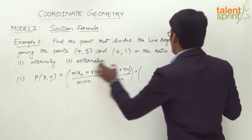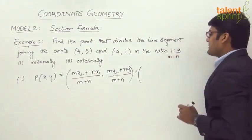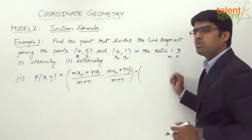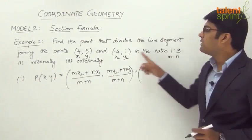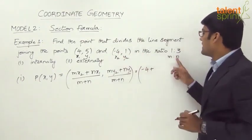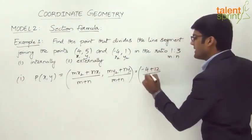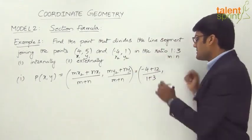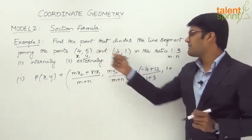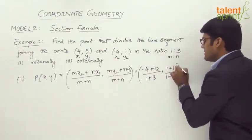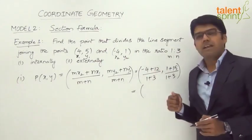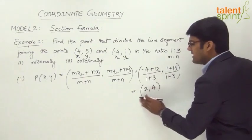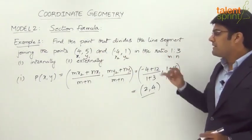So let us substitute the values. The ratio is 1:3, so m = 1 and n = 3. Here (x1, y1) = (4, 5) and (x2, y2) = (−4, 1). So mx2 = 1 × (−4) = −4, and nx1 = 3 × 4 = 12, divided by m + n = 1 + 3 = 4. And my2 = 1 × 1 = 1, plus ny1 = 3 × 5 = 15, divided by m + n = 4. On simplification: −4 + 12 = 8, and 8/4 = 2; 1 + 15 = 16, and 16/4 = 4. So the point that divides this line segment in the ratio 1:3 internally is (2, 4).